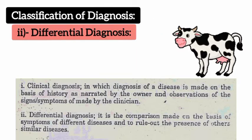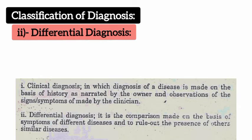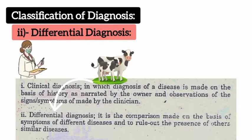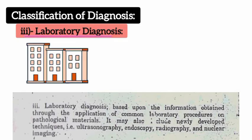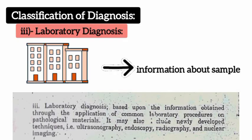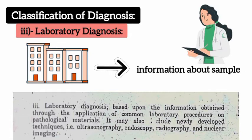The second class is differential diagnosis, in which we compare the signs and symptoms of different diseases to recognize other similar diseases. The third class is laboratory diagnosis, which is based on information from lab tests of pathological materials.